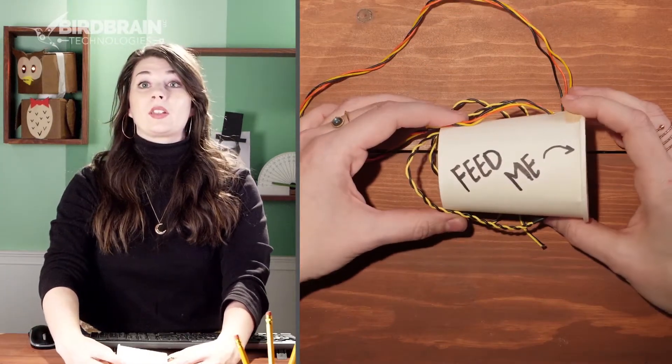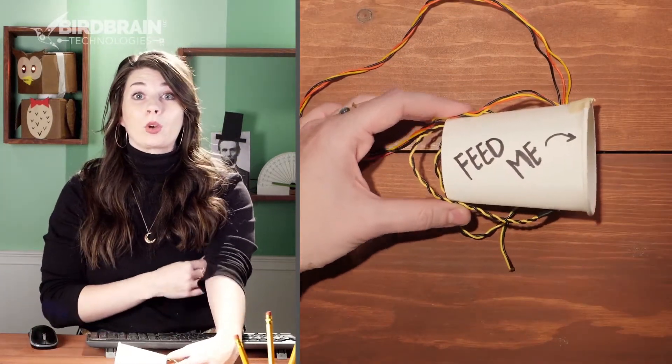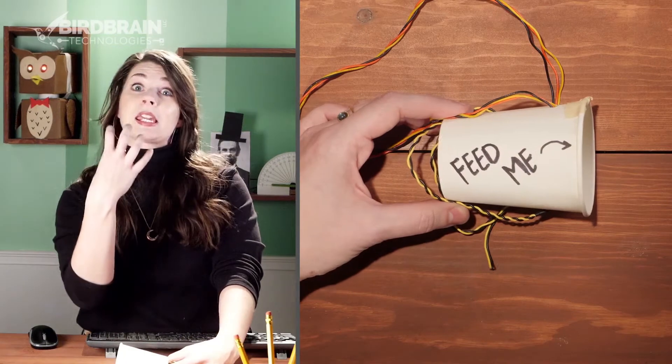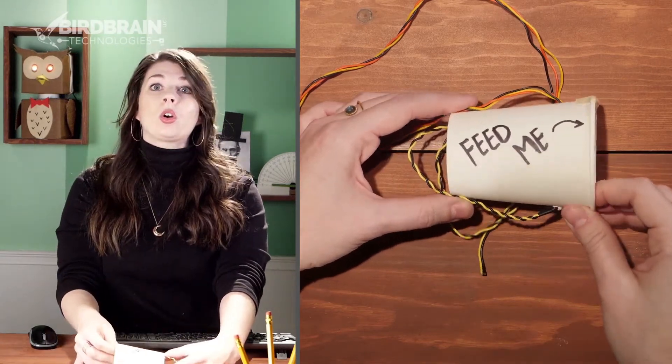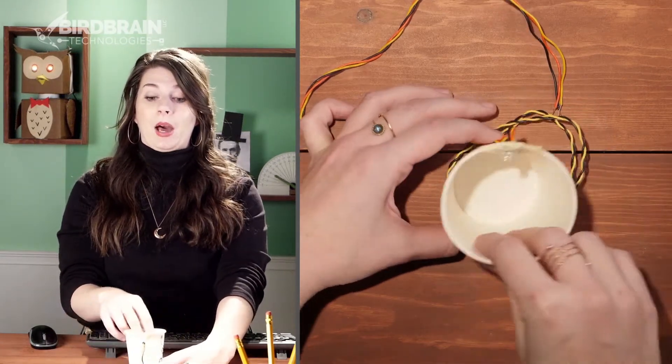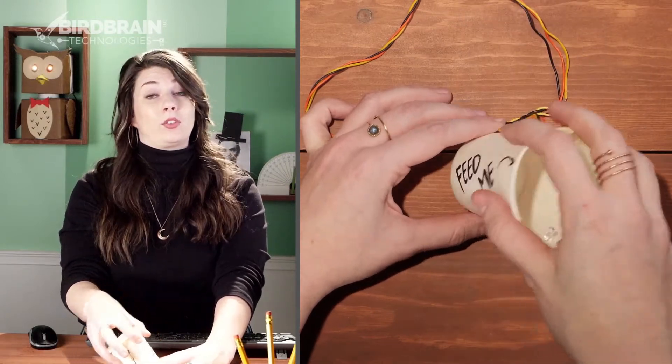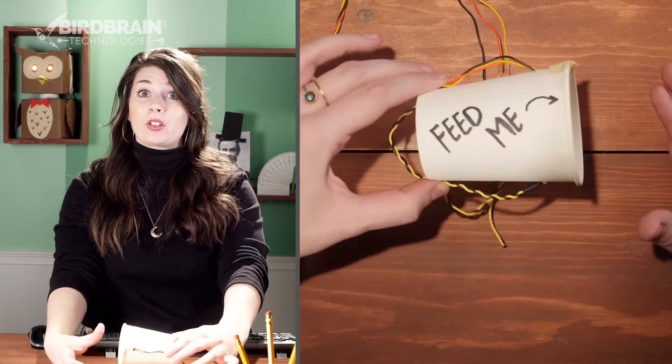And you could even incorporate this cup into the design of your robot as well. This could be a beak, or a snout, or something like that. Or you could put a setup like this behind the front face of your robot as well. So there's another way that you might interact with a robot petting zoo animal.